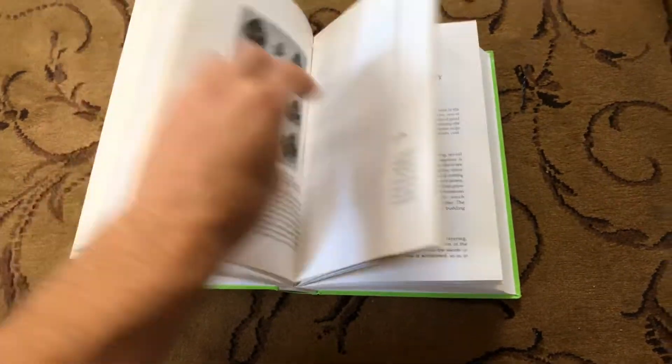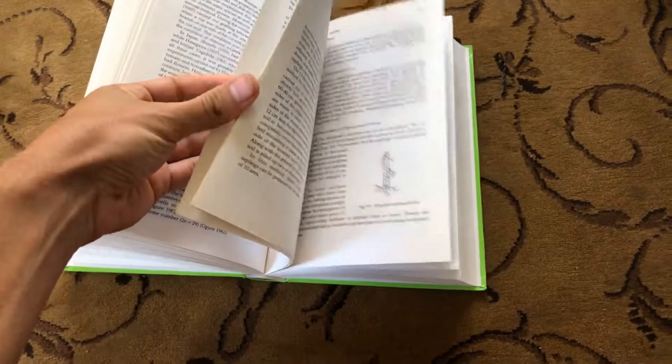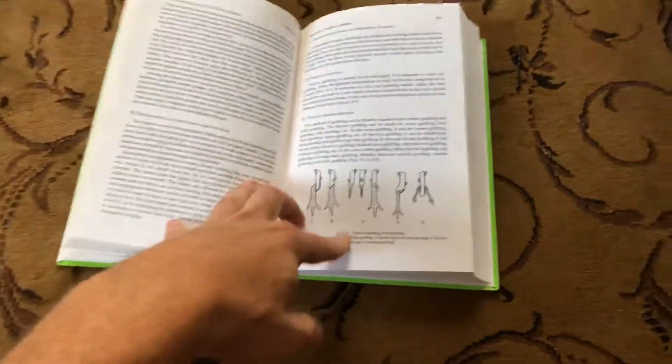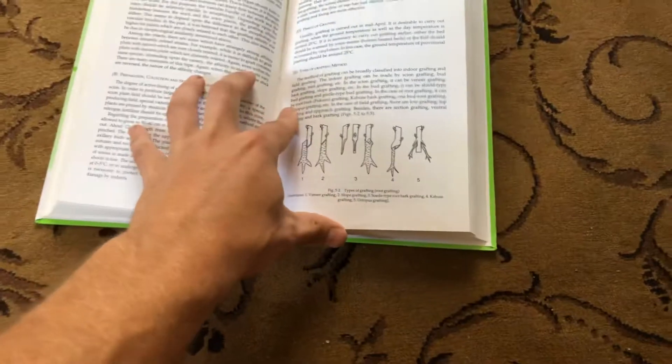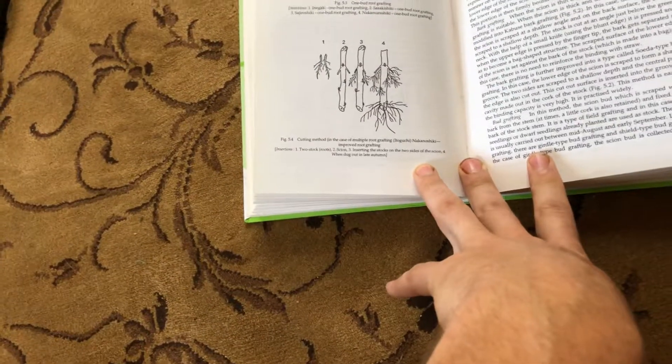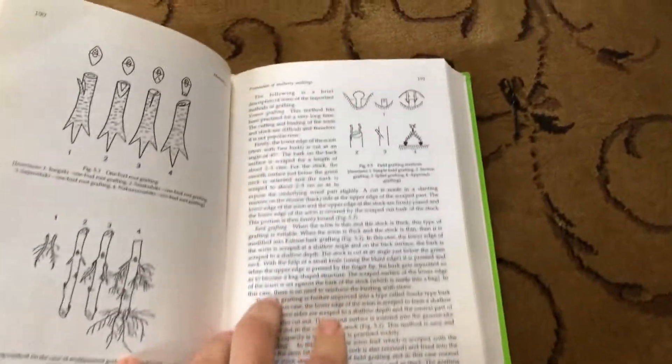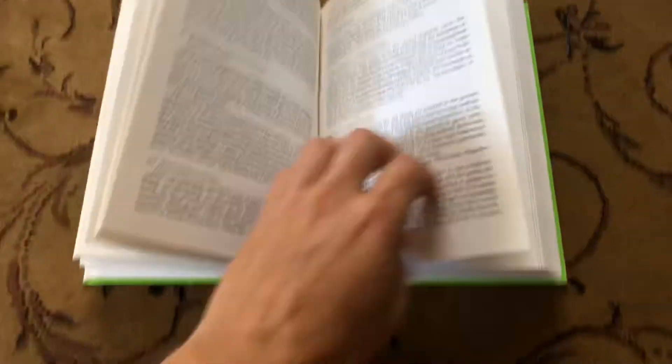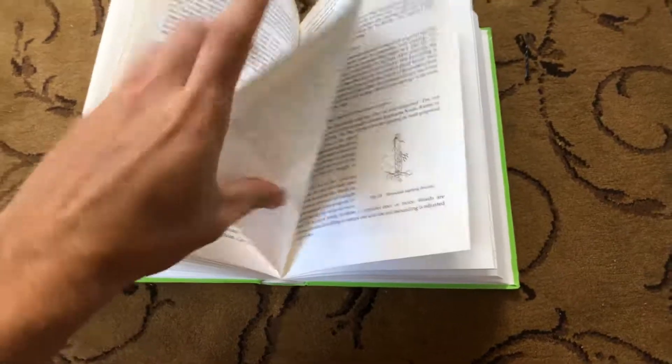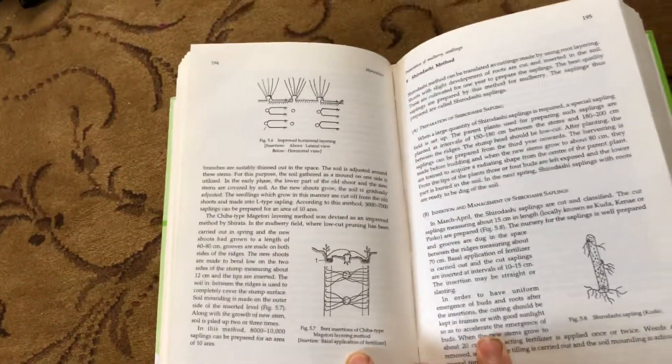So for example, if we were to go to propagation, there are some grafting diagrams. Things I've never seen before in any tree book that I've read. Talking about different types of grafting, ways to work with cuttings. Basically these really interesting tree hacks, I guess you could call them. Ways to trellis them and train them.